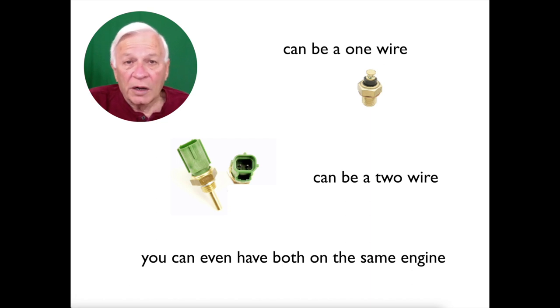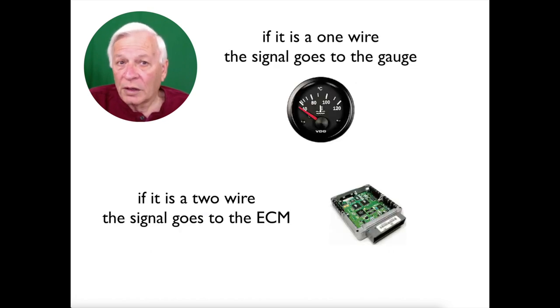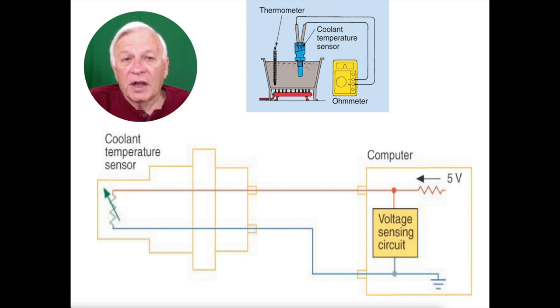They can be a one wire, they can be a two wire, and you can even have both on the same engine. If it is a one wire, the signal goes to the gauge on your dashboard. If it is a two wire, the signal goes to the ECM.